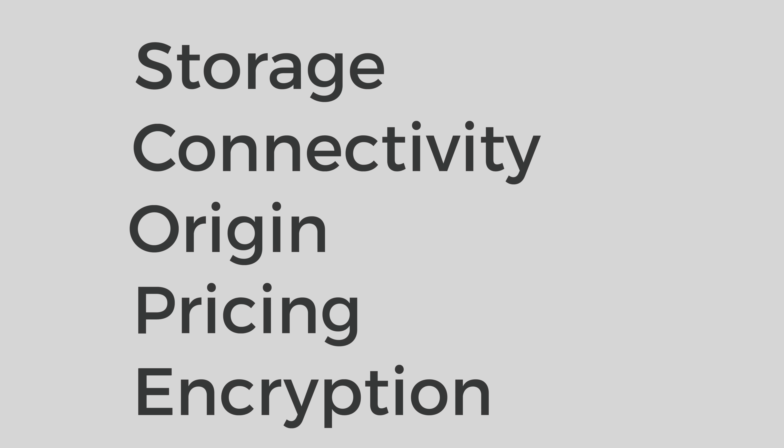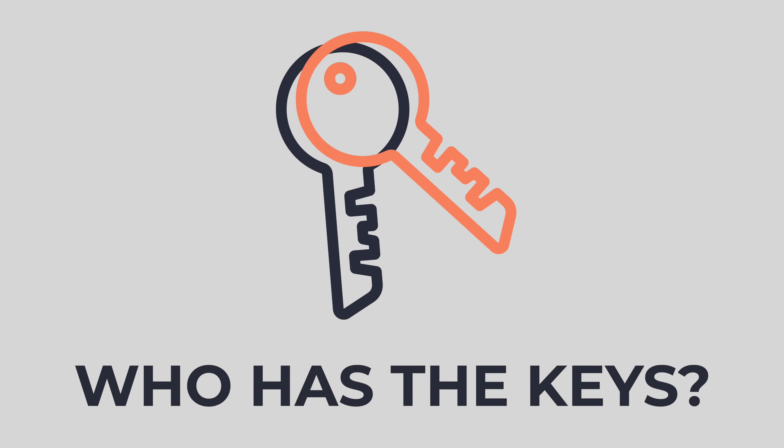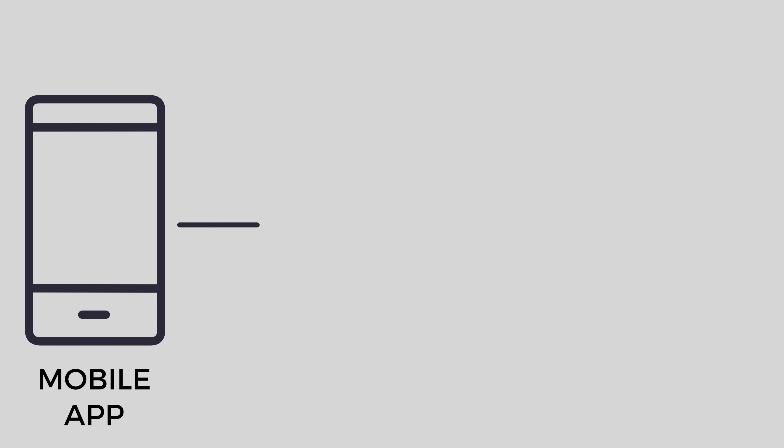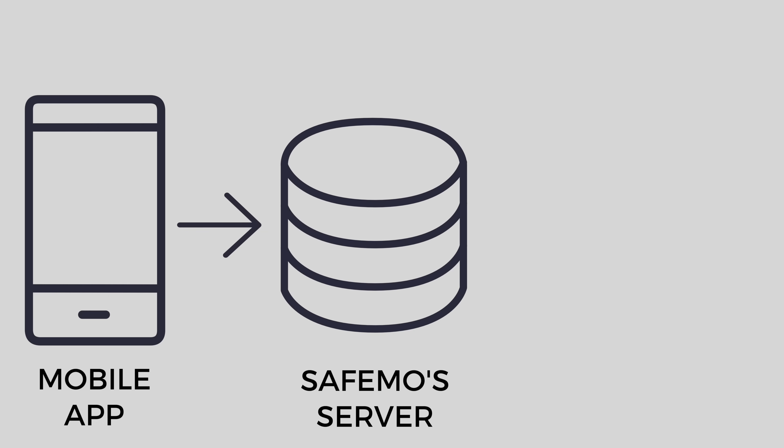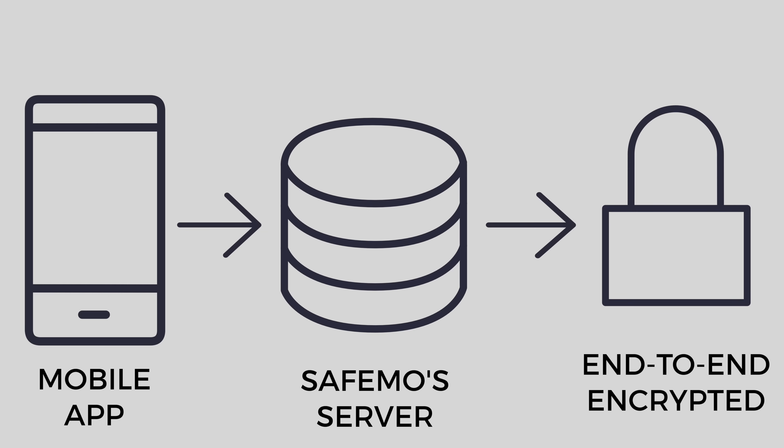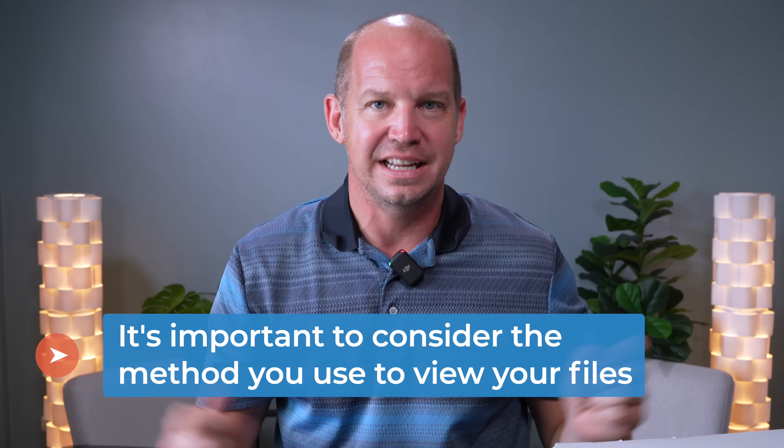Finally, we look at encryption. For companies uploading to the cloud, the question is: do you have the keys, and do they have the keys? For local storage, you need to understand how you're accessing it. For SafeMo, I have a mobile app, and I found out that my connection between the app and my hub goes through one of their servers, but that connection is end-to-end encrypted — only I can view it, and it's not stored on their servers, just passing through from local storage. A NAS like Synology might be a better option if you want more direct control.